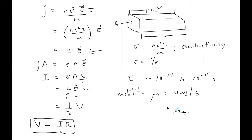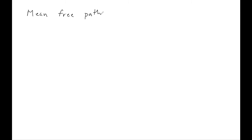The mobility mu contains information about the relaxation time, while the conductivity contains information about both the density and the relaxation time. Let's define one other piece of terminology: the mean free path. This is the distance that each electron travels on average before it collides with another ion. The mean free path L equals the average velocity times the collision time tau.